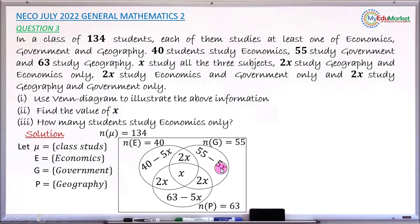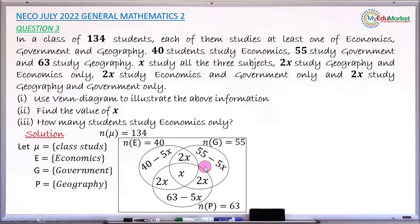We now have all 7 regions filled in. There are no students outside the three circles but inside the rectangle, because the question states each student studies at least one of the three subjects — so all 134 students must be inside the circles. This answers Roman numeral 1.